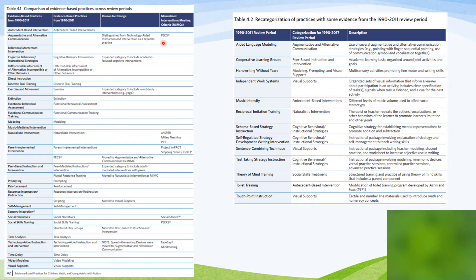I can look under augmentative and alternative communication and see that PECS — the Picture Exchange Communication System — which in the previous evidence-based practice report was its own category, is now considered a manualized intervention that falls under augmentative and alternative communication. I can look down to the category of exercise and movement and see that this category was expanded to include mind-body interventions such as yoga. On the right side of the screen, I can see where some of the older domains went — for example, toilet training has now been moved into antecedent-based interventions.